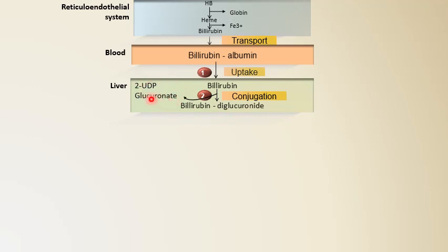After transport inside the liver, the internalization of bilirubin is done with the help of two proteins: ligandin and protein Y. These proteins can be asked about in entrance exams. Their main role is to prevent the reflux of bilirubin from the liver back into the blood.